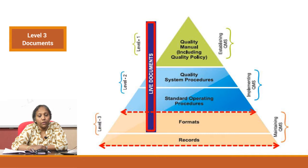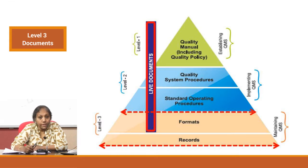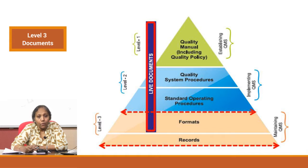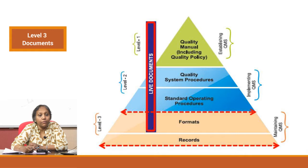Now we will go on to Level 3 documents, which are the documents required to maintain the quality management system that has been effectively implemented through the Level 2 documents. How do you maintain that? Every activity that has been defined, once it is done, the activity has to be captured. The evidence of that activity has to be captured — both the fact that the activity has been done and that it has been done accurately — and therefore you need some kind of mechanism to capture this data.